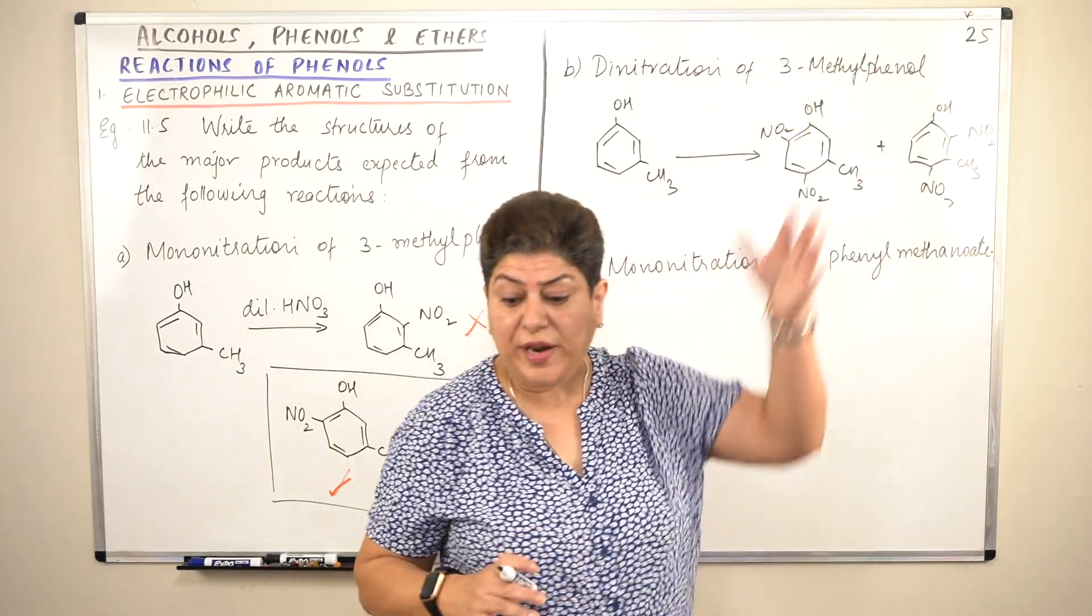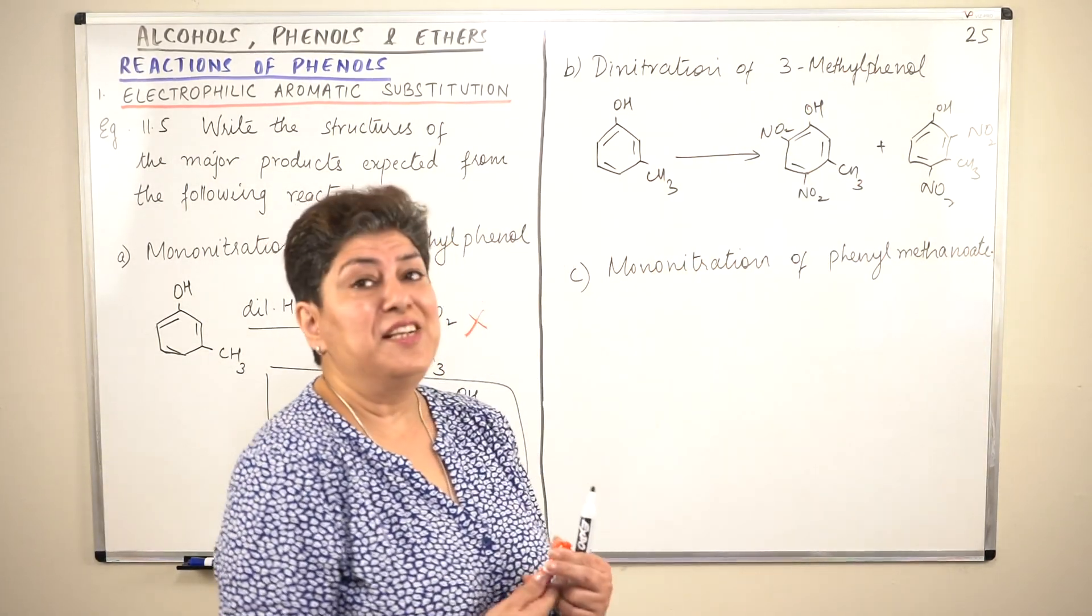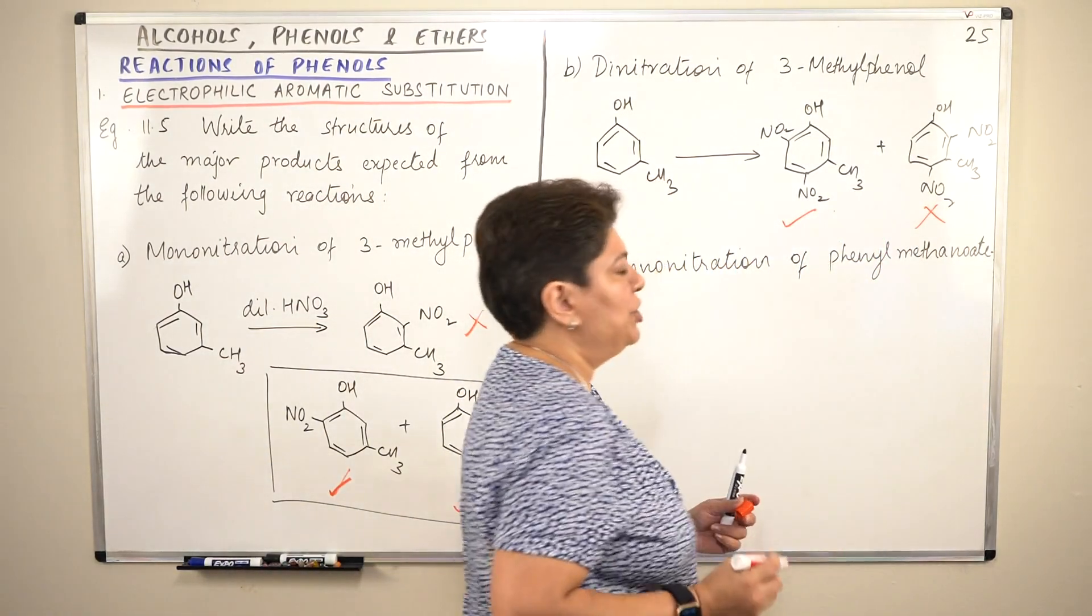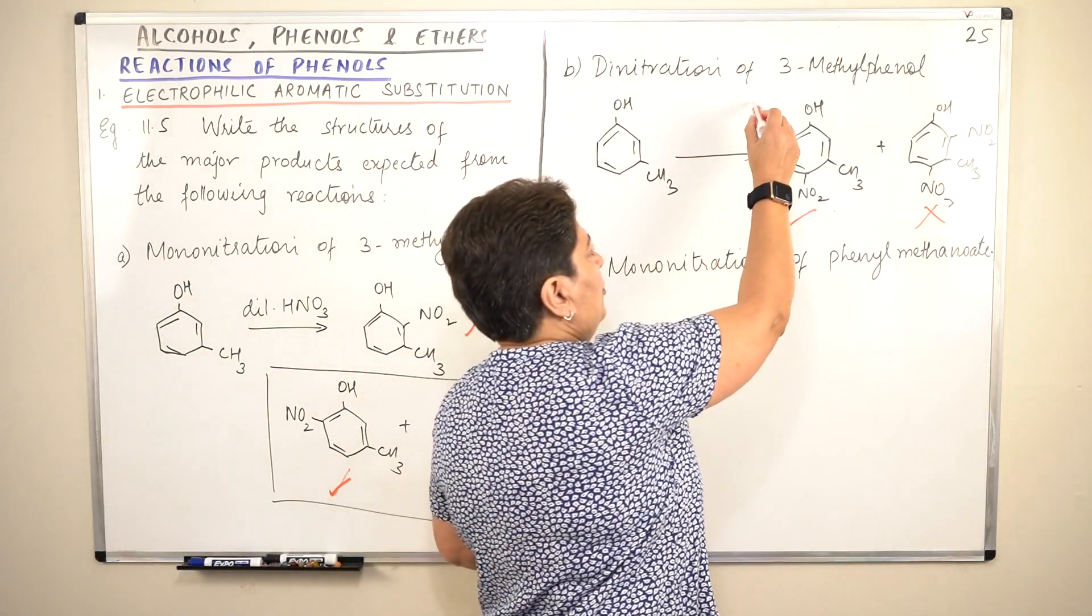This cannot be the major product. You see 1, 2, 3, 4, four adjacent carbons having substituents. This is definitely very, very unstable. This would be your major product. So your answer is only this.